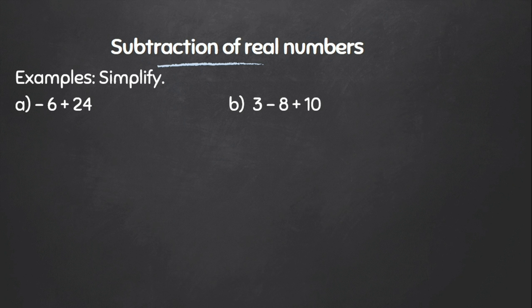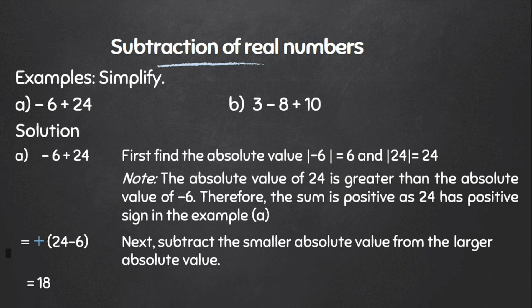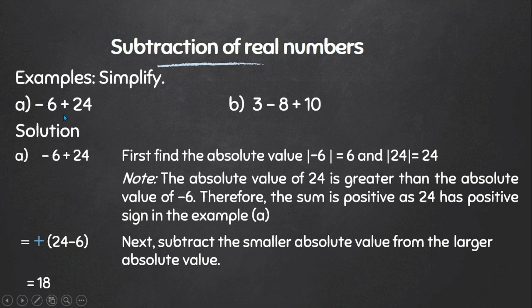In example A, we find that two numbers have different signs, so it is a case of subtraction. We first find the absolute values of the two numbers, then subtract the smaller absolute value from the larger absolute value, and apply the sign of the number with the larger absolute value.